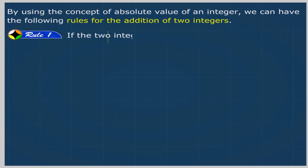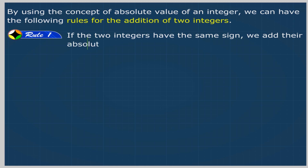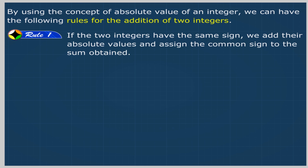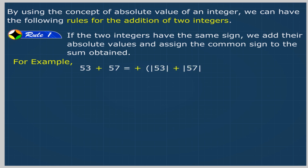Rule 1: If the two integers have the same sign, we add their absolute values and assign the common sign to the sum obtained. For example, +53 plus +57 is equal to plus (|53| + |57|) is equal to +(53 + 57) is equal to +110.